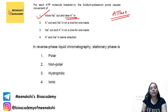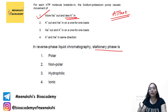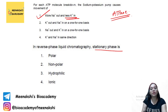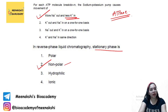In reverse phase chromatography, the stationary phase is non-polar. In normal chromatography the stationary phase is polar and the mobile phase is non-polar, but in reverse phase chromatography the stationary phase is non-polar and the mobile phase is polar. So the answer will be option 2.